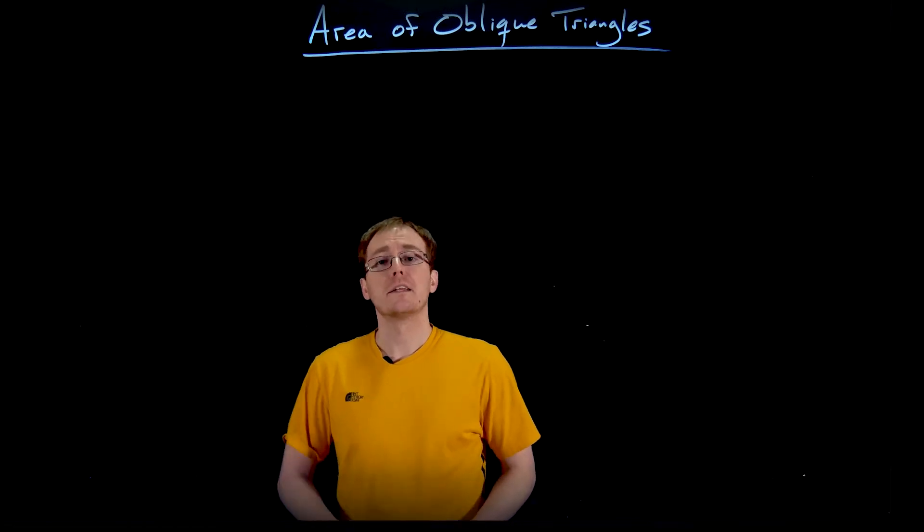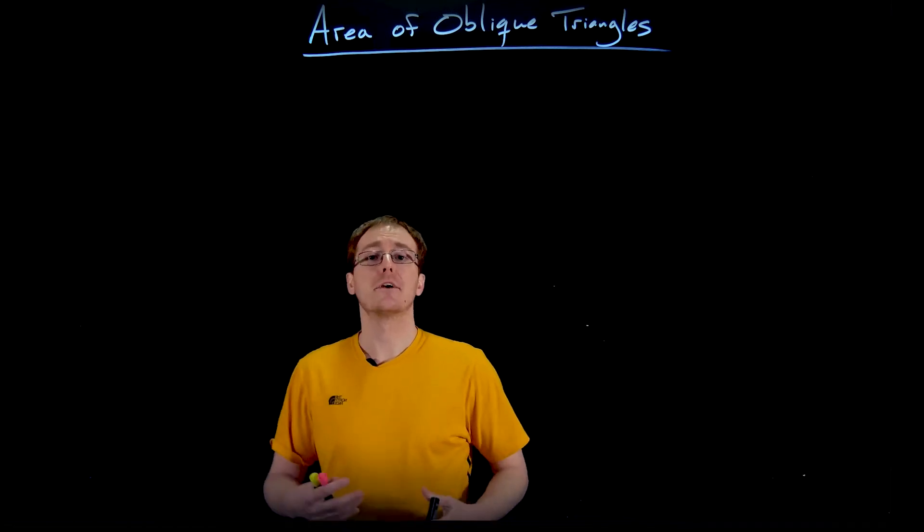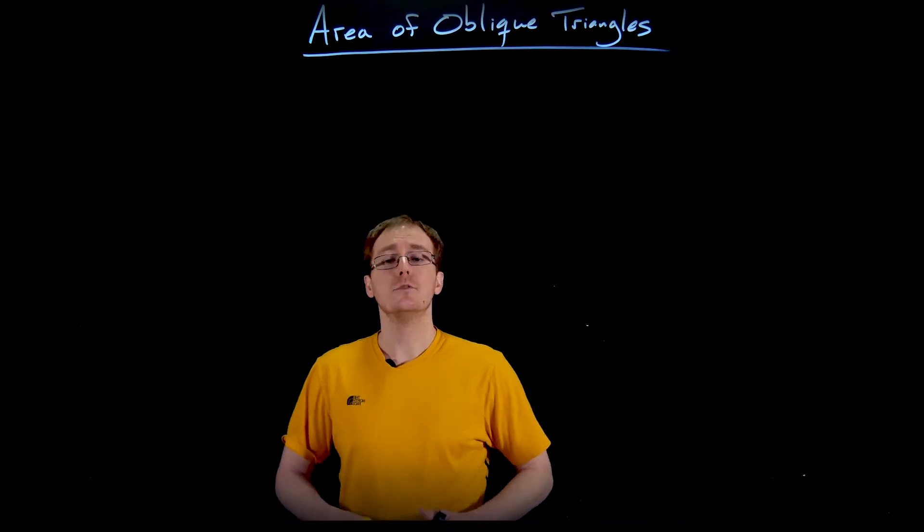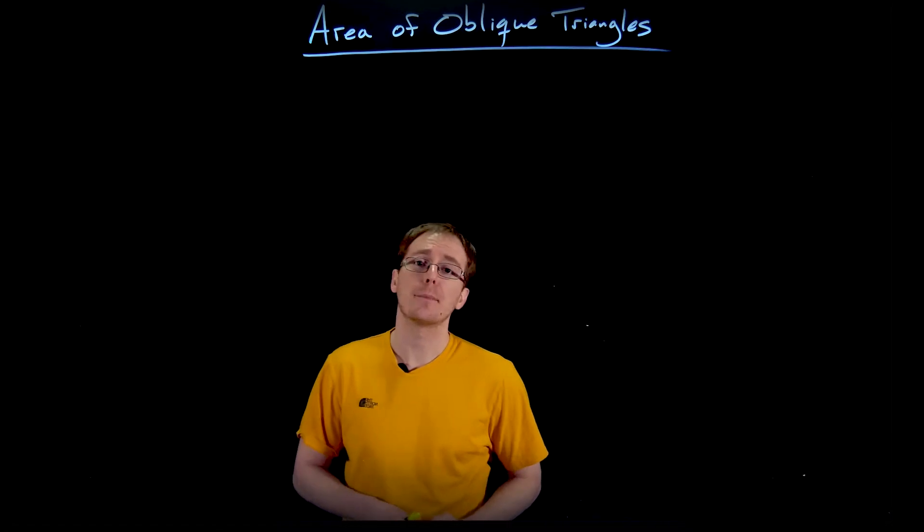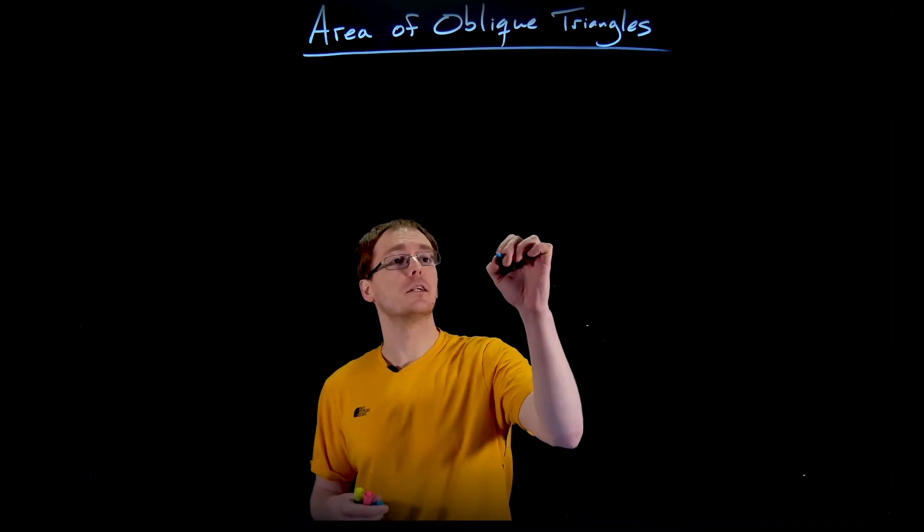Hello everyone. In this video we're going to work together to find a general formula for the area of the oblique triangle using two of the side lengths and the angle between those two side lengths. So let's go ahead and start by drawing a picture of an oblique triangle.